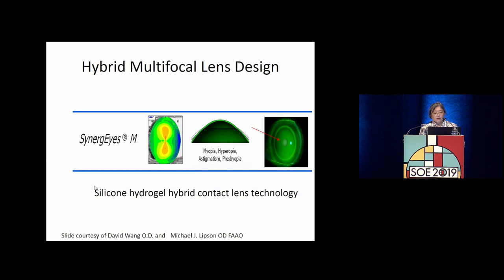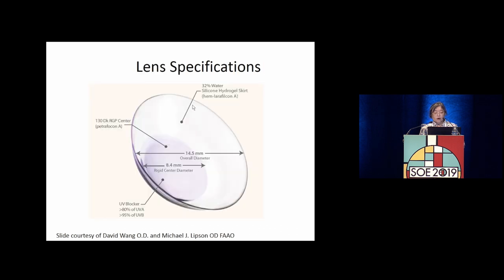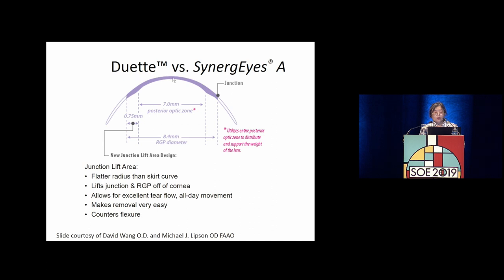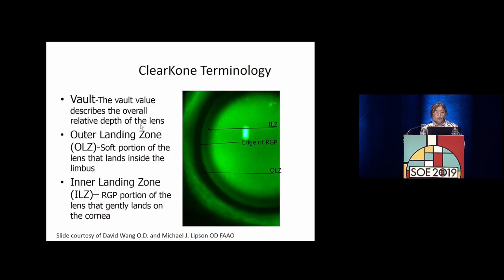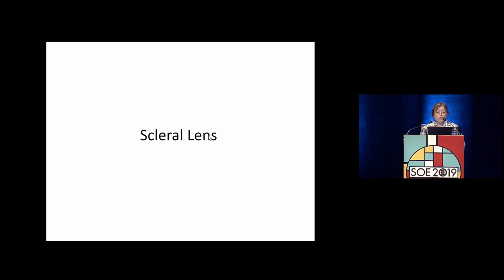Alternatives to traditional RGPs include piggyback lenses — RGP on a soft contact lens — and hybrid lenses with a silicone skirt. One hybrid design called the Duette has a peripheral silicone skirt with a central RGP. Another hybrid design, the ClearCone, has bearing on the conjunctiva that vaults over the cone. Scleral lenses vault completely over the cornea, with an outer and inner landing zone, the inner landing zone touching the limbus and the outer zone landing on the sclera.